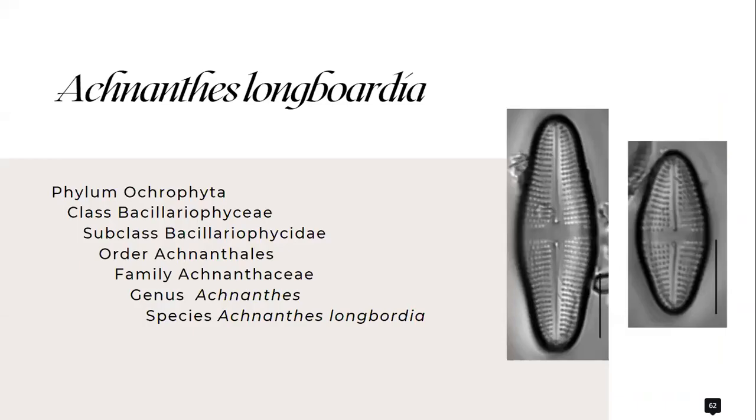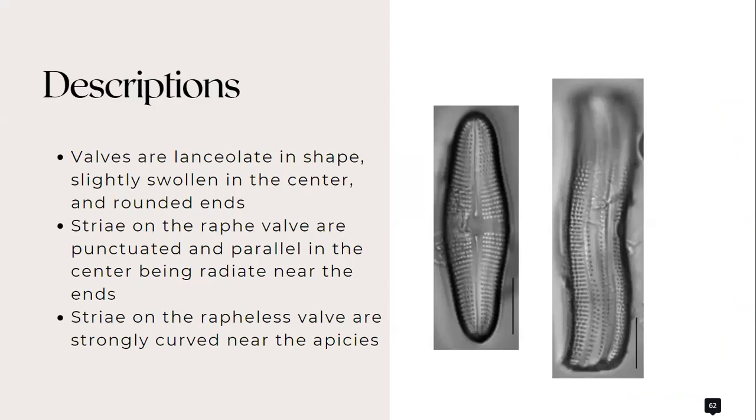Firstly, the species Achnanthes lombardia from the family Achnanthaceae. This species has these specific descriptions, namely the valves are lanceolate in shape, slightly swollen in the center, and has rounded edges.